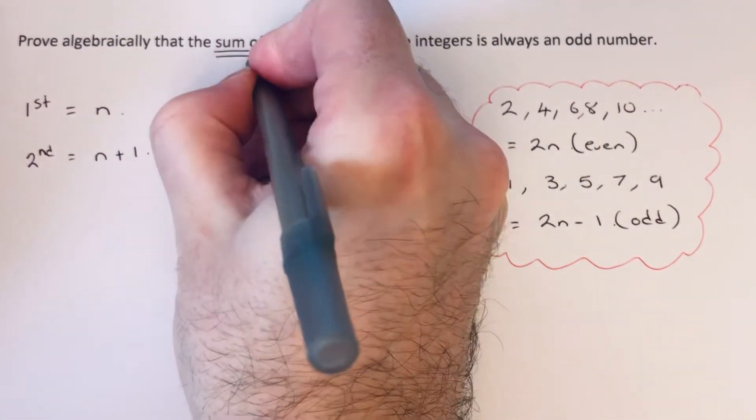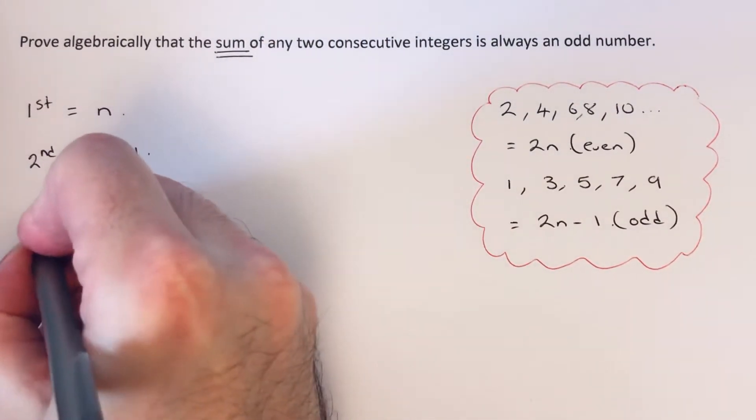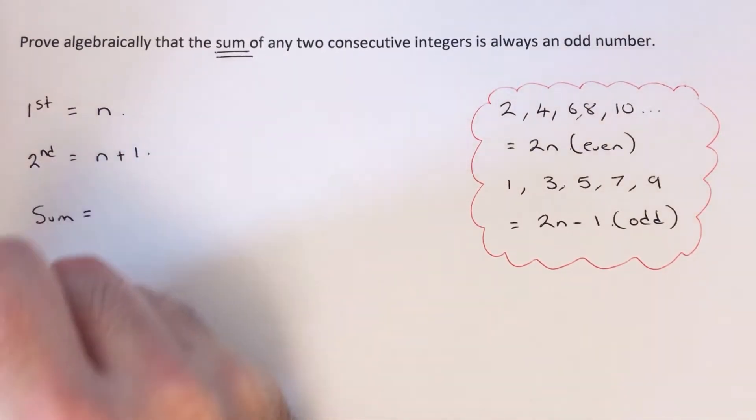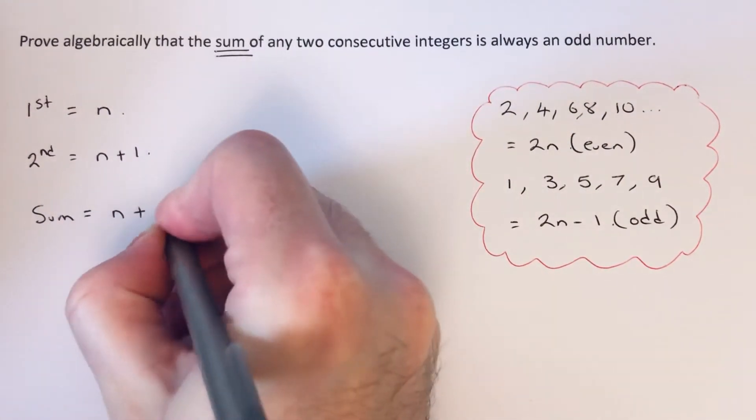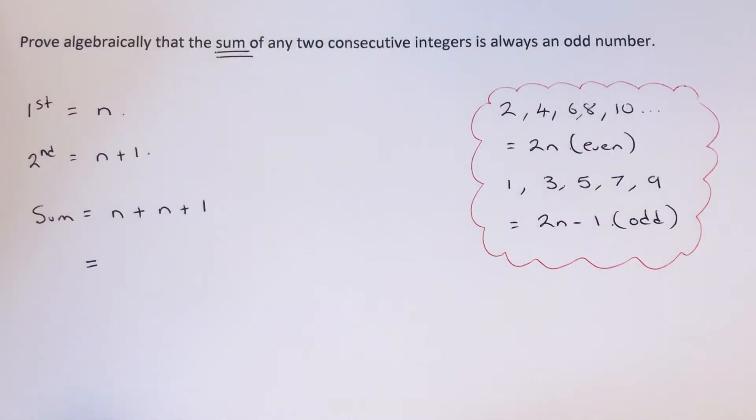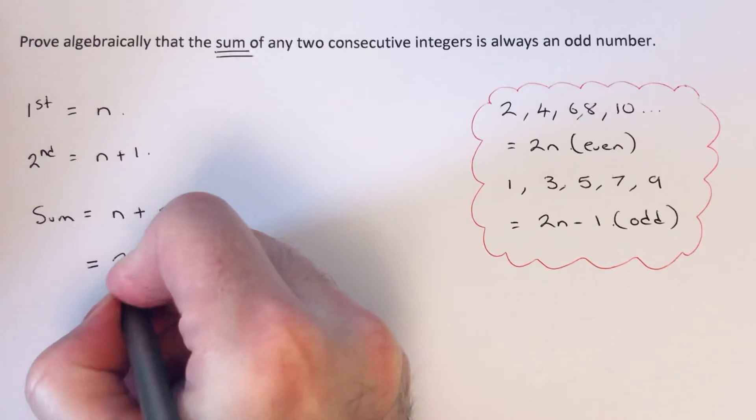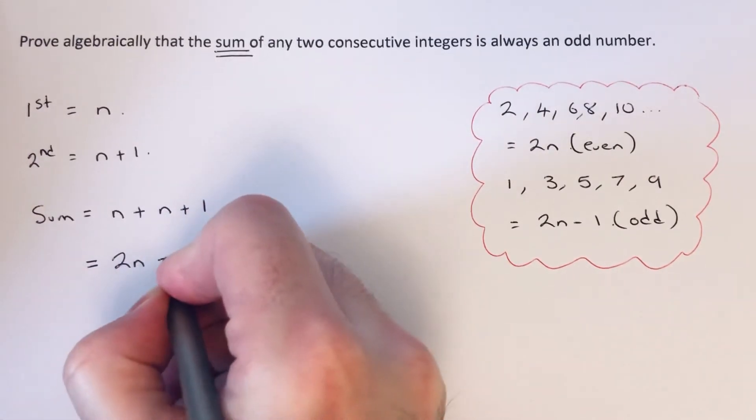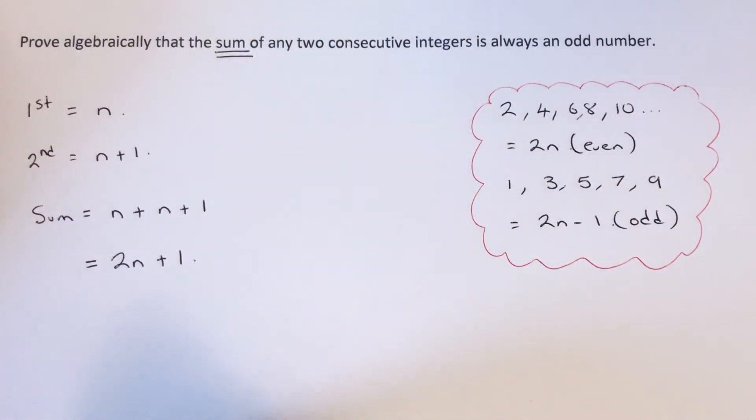So what we need to do now is work out our sum. So to find the sum, we add these two numbers up. And if we simplify this, we can add the two n's together to give us 2n, and we're just left with a plus 1 at the end.